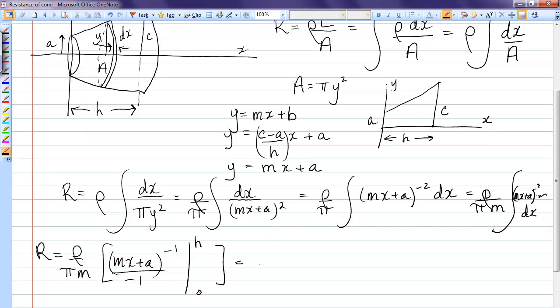Because that's our x dimension. So let's carry on. I'm going to take that negative sign out. So I have minus ρ over πm, put in the h, and I have 1 over (mh + a) minus, put in the 0, 1 over a.